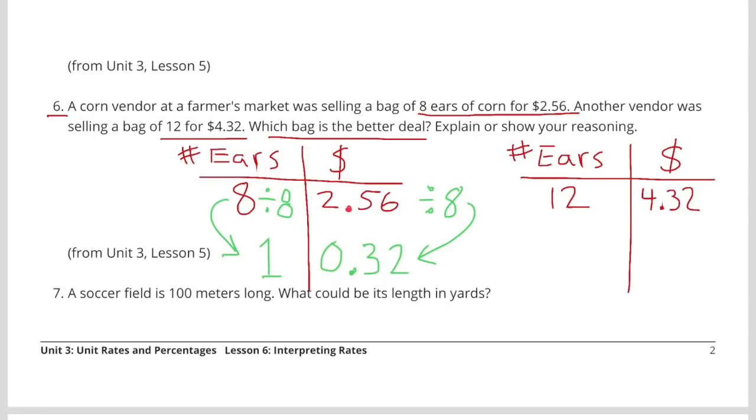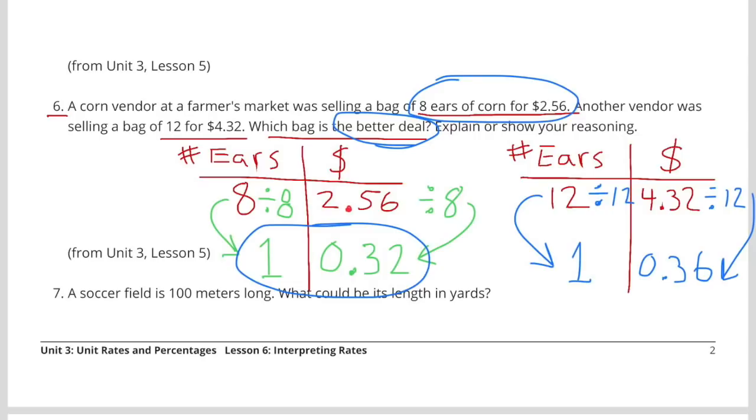The table shows the first vendor sells the ear of corn for 32 cents. 8 divided by 8 equals 1, and $2.56 divided by 8 equals 32, so 1 ear of corn for 32 cents. The second vendor sells an ear of corn for 36 cents. 12 divided by 12 equals 1, and $4.32 divided by 12 equals 36 cents. The better deal is the first vendor, 1 ear of corn for 32 cents.